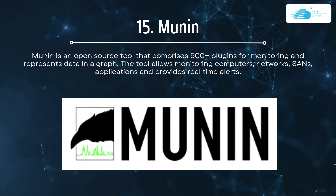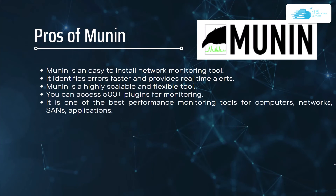Number fifteen on our list is Munin. Munin is an open source tool that comprises more than 500 plugins for monitoring and represents data in graphs. It allows monitoring of computers, networks, SANs, and applications and provides real-time alerts. The pros include being easy to install, identifying errors faster with real-time alerts, being highly scalable and flexible, providing more than 500 plugins for network monitoring, and being considered one of the best performance monitoring tools for computers, networks, SANs, and applications.